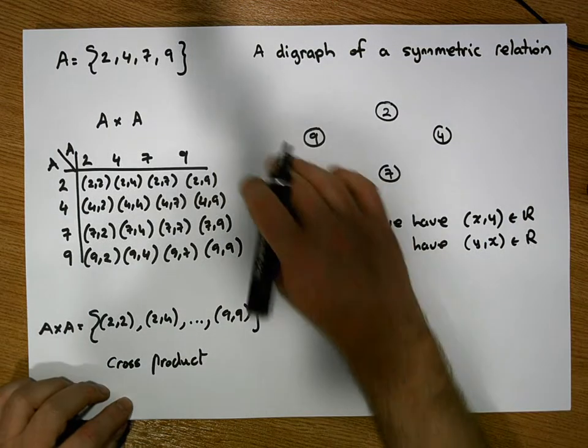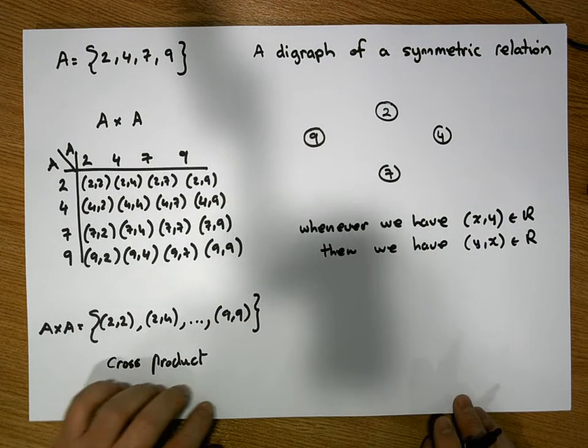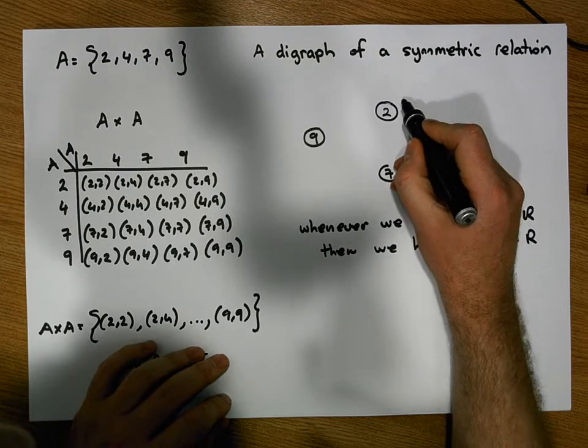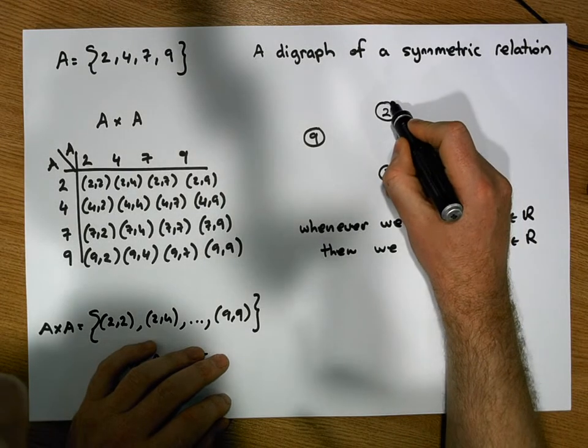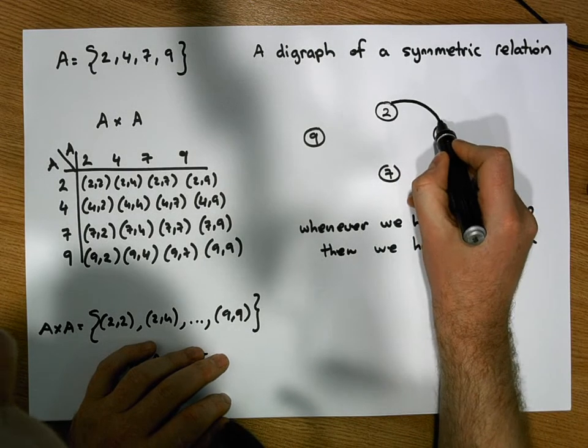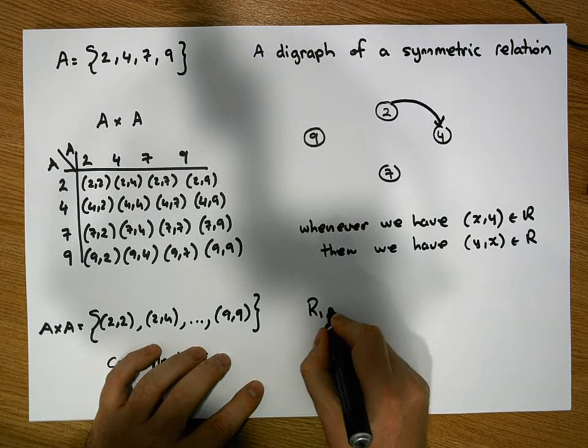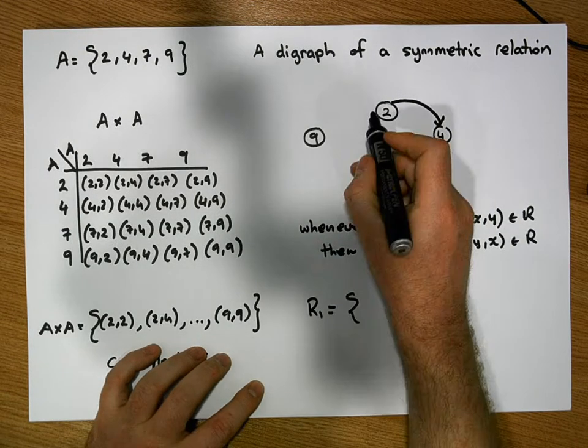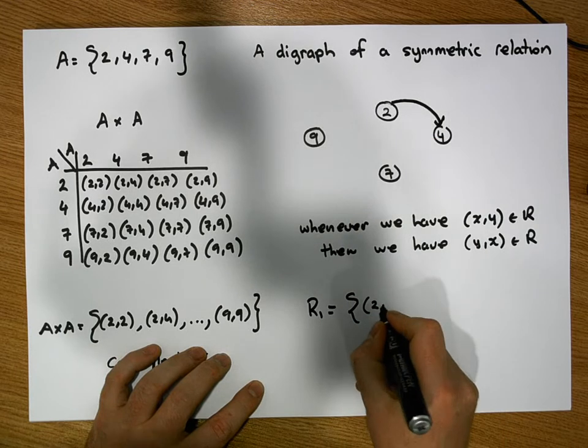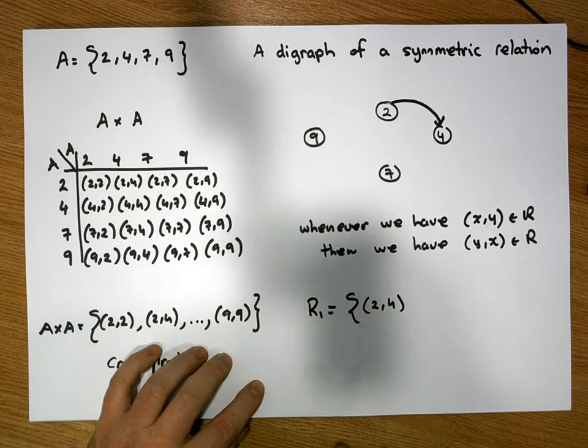So let's create a relation from this particular digraph. Let's just put an edge from node 2 to node 4. So the relation here, let's call this R1, at this stage would contain the ordered pair (2,4).